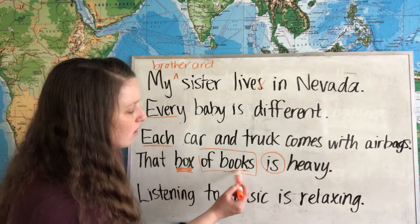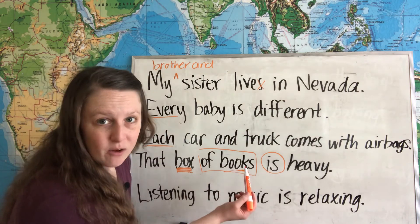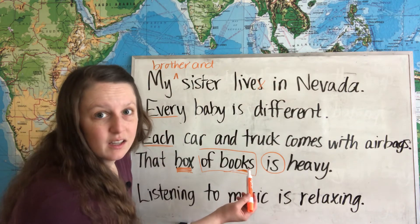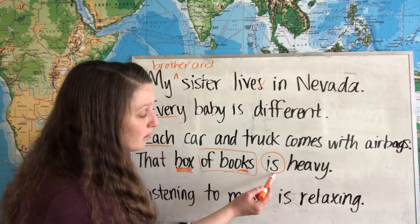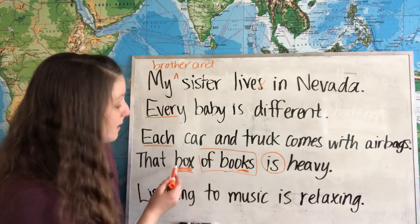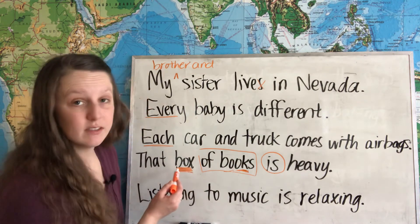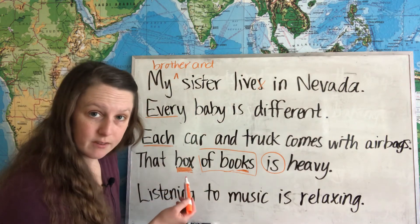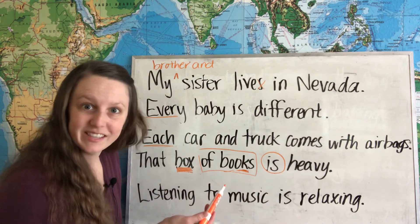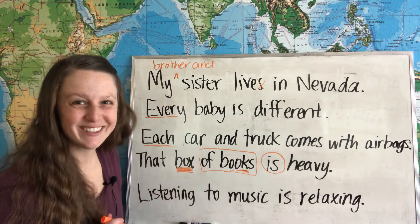Even though 'books' is a plural noun here, we still need a singular verb, because the main subject of the sentence — the subject of the verb — is singular.